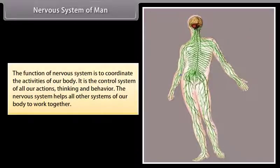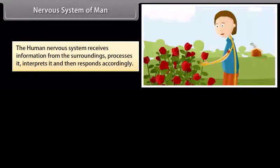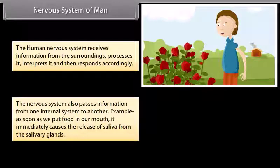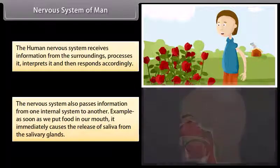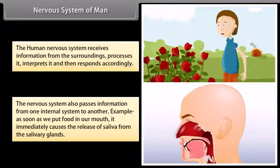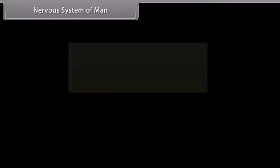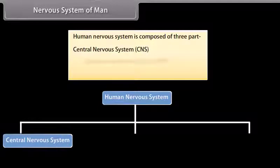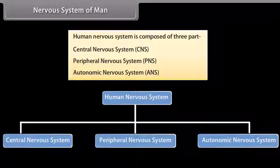The function of the nervous system is to coordinate the activities of our body. It is the control system of all our actions, thinking, and behavior. The nervous system helps all other systems of our body to work together. The human nervous system receives information from the surroundings, processes it, interprets it, and then responds accordingly. It also passes information from one internal system to another — for example, as soon as we put food in our mouth, it immediately causes the release of saliva from the salivary gland. The human nervous system is composed of three parts: neurons, central nervous system (CNS), peripheral nervous system (PNS), and autonomic nervous system (ANS).